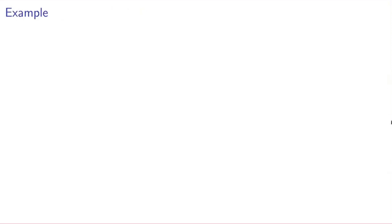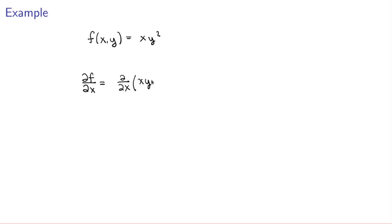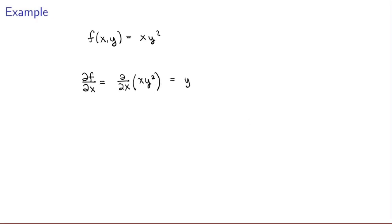Let me work through an example. Suppose I consider the function of two variables f(x, y) = xy². I want to evaluate its partial derivative with respect to x and with respect to y. Let's first evaluate ∂f/∂x. This is just taking the derivative with respect to x but keeping y constant. Because y is a constant, I can pull y² out of the derivative, and I get just the derivative of x with respect to x, which is 1. So the result is y².